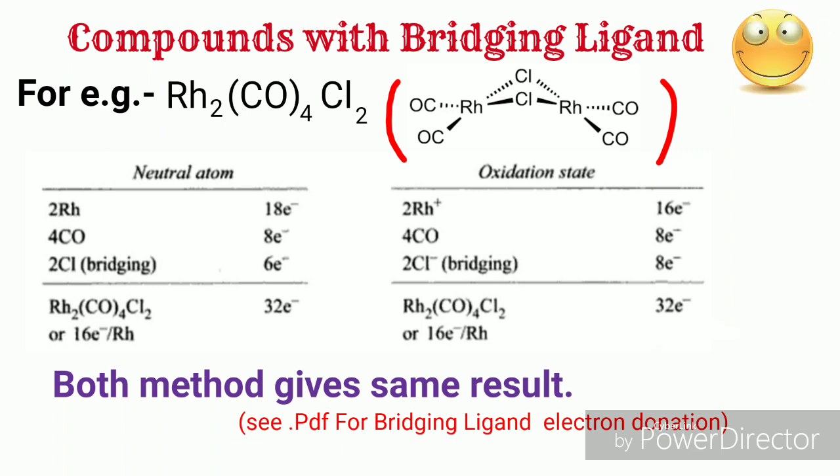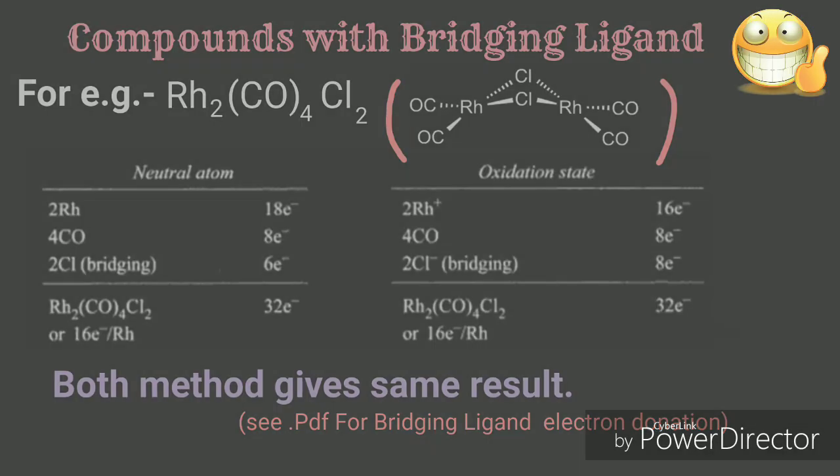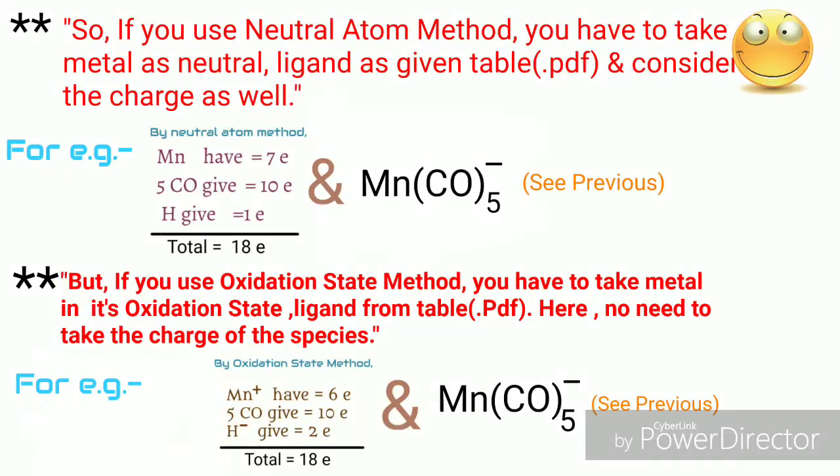For example, Rh₂(CO)₄Cl₂ having the structure you can see on the screen. The compound obeys 16 electron rule per rhodium atom by both the methods.